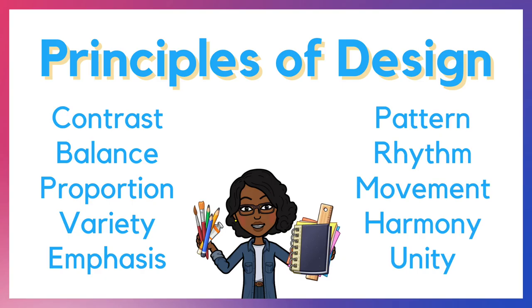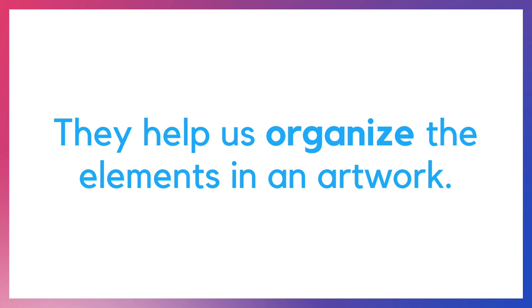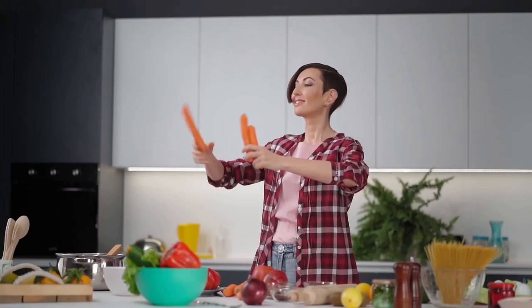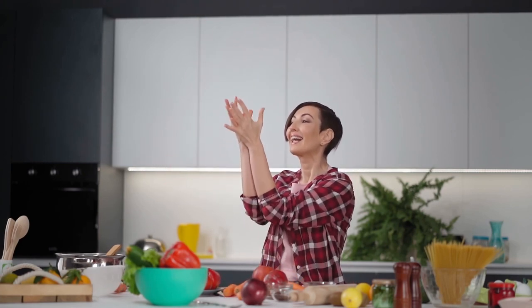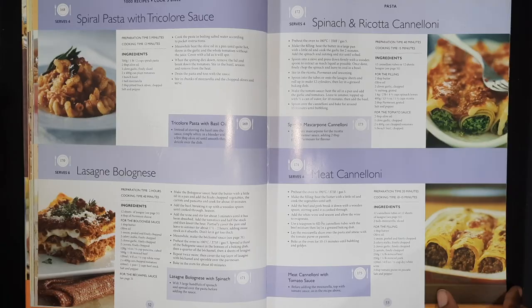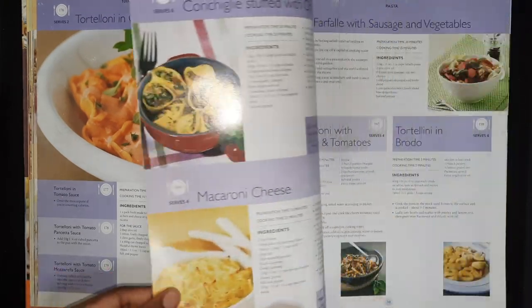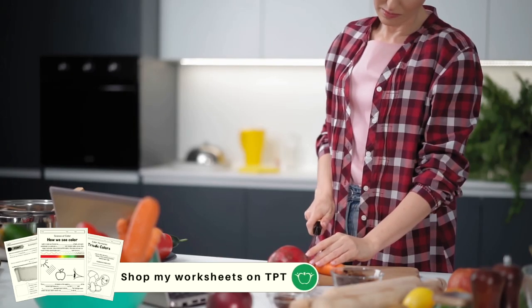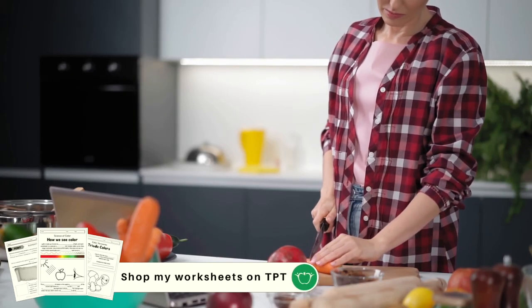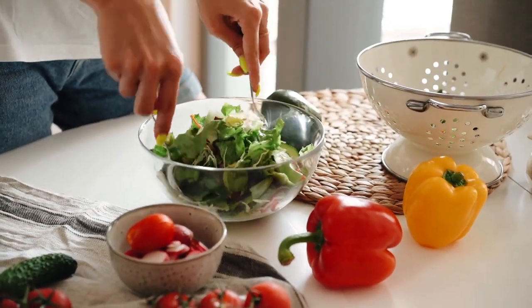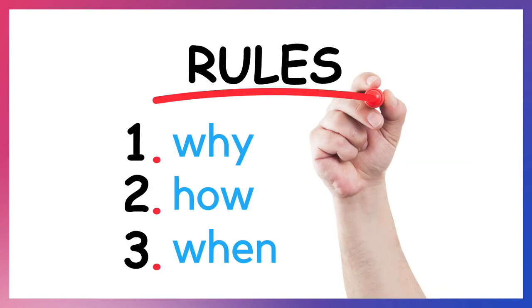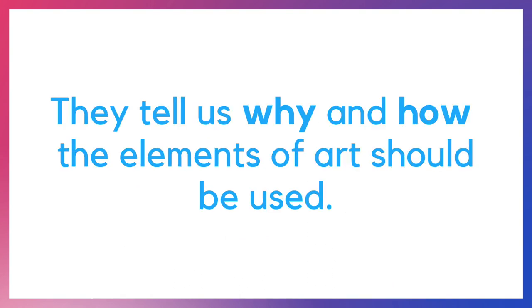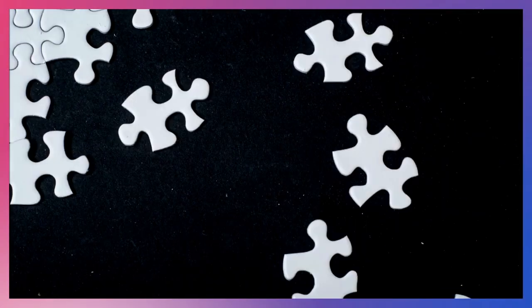The principles of design help us organize the elements in an artwork. Think of the elements of art as the ingredients needed for a dish. If the elements are the ingredients, then the principles are the recipe. Recipes tell us how to prepare and cook the ingredients — just like recipes, the principles of design act as rules that tell us why, how, and when the elements of art should be used.